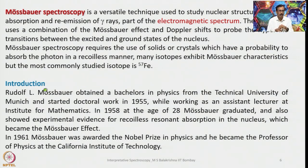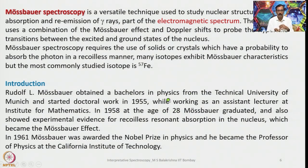Rudolf L. Mössbauer, in whose name this spectroscopy is known, obtained a bachelor's in physics from the Technical Institute of Munich, Germany, and started doctoral work in 1955. Meanwhile, he was working as an associate lecturer in the Institute for Mathematics, and in 1958 he obtained his doctoral degree. During that time he showed experimental evidence for recoil-free resonance absorption in the nucleus, which became popularly known as the Mössbauer effect.